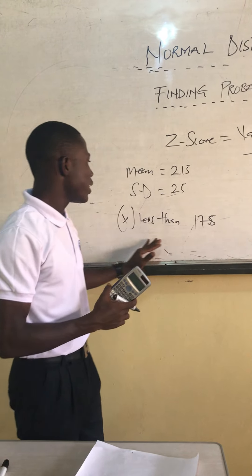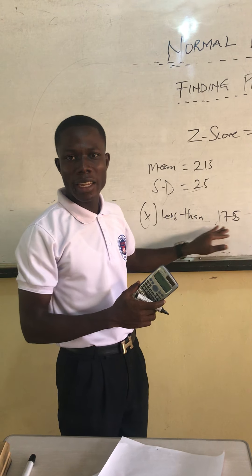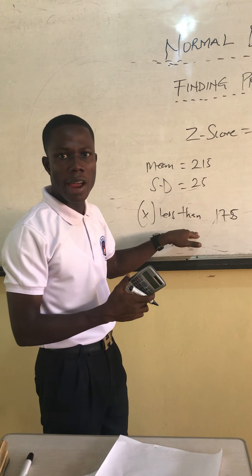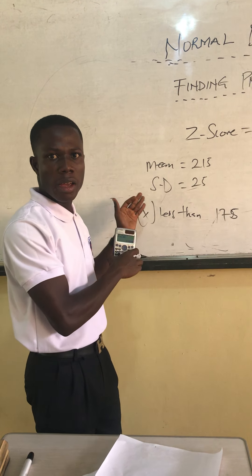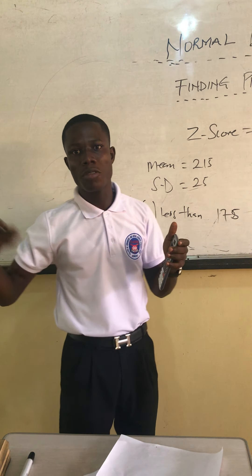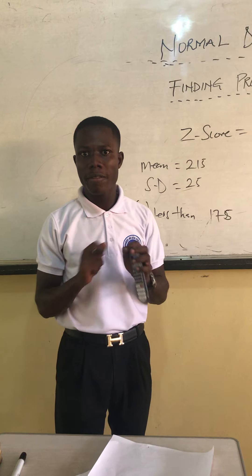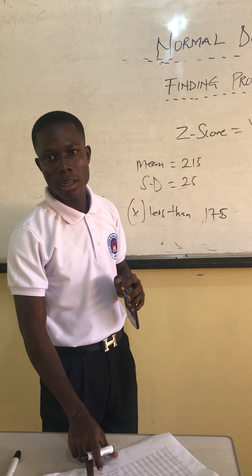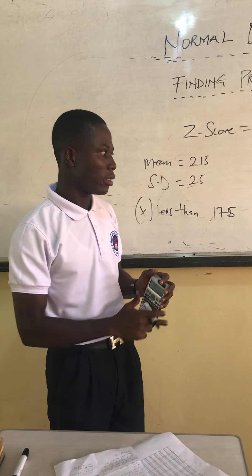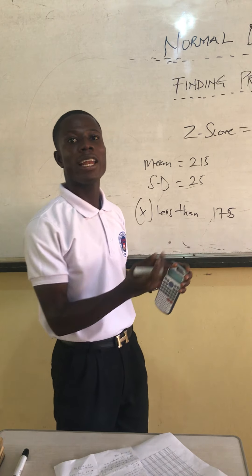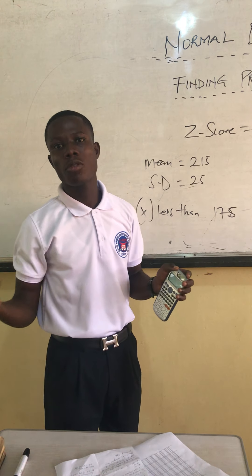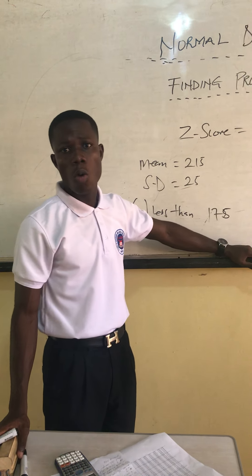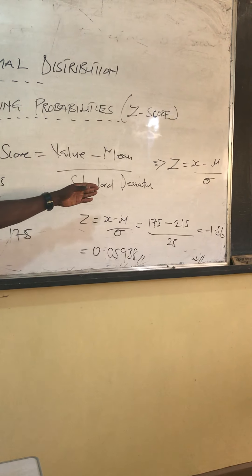Because X was less than 175, we find the Z on the left — the area on the left of Z. When it is greater than, you find it on the right of Z. Please don't be confused. That's how we find the areas on the standard normal table: less than means left of Z, greater than means right of Z.